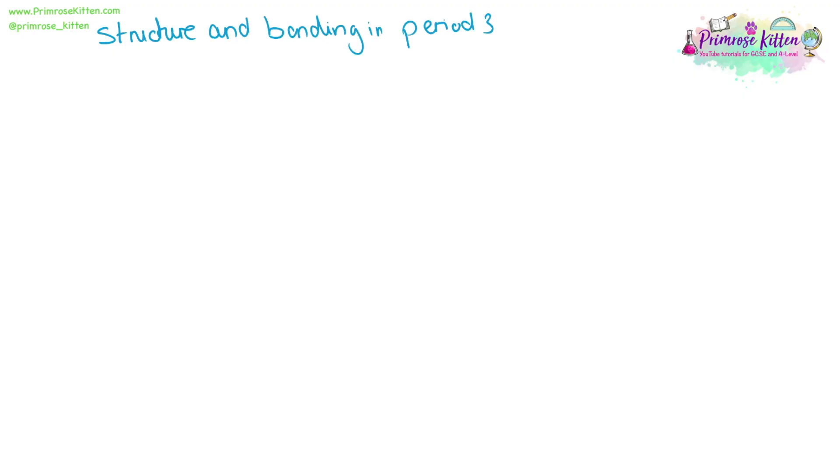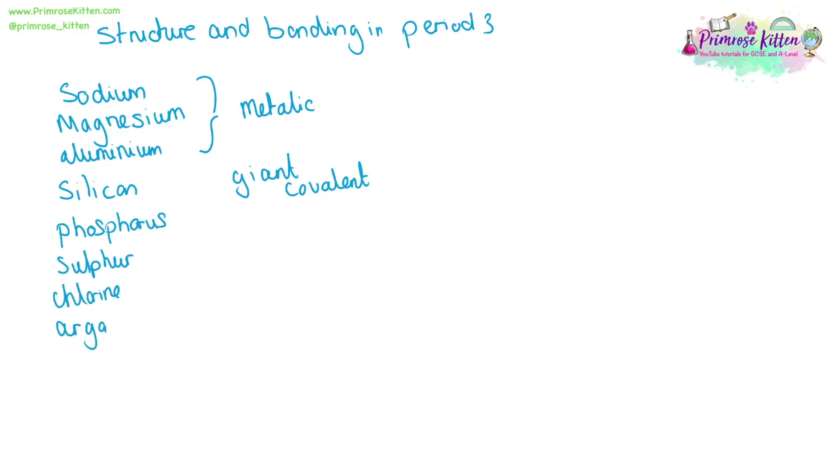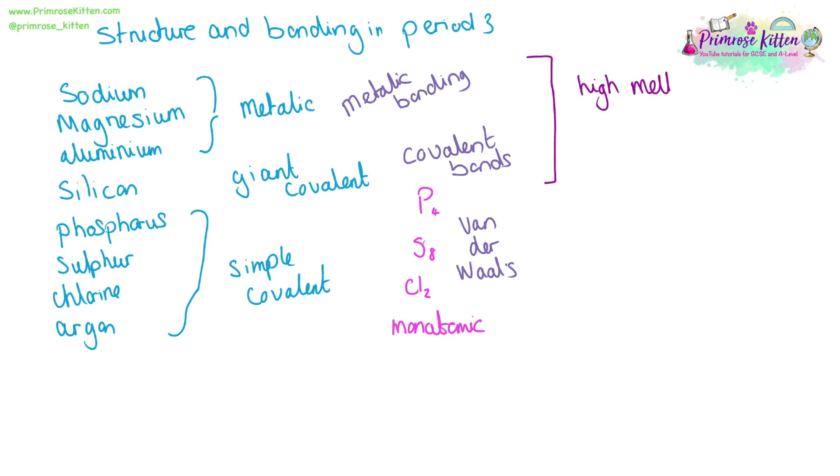As we move across, we can see a change in the structure and the bonding of period three elements. Sodium, magnesium, and aluminum will show metallic bonding and the properties that come along with that. Silicon will make giant covalent structures. Phosphorus, sulfur, and chlorine will make simple covalent structures. And argon is monoatomic. Metallic bonding and giant covalent structures will have high melting and boiling points, whereas the rest of them will have low melting and boiling points, due to the differences in the type of bonds.